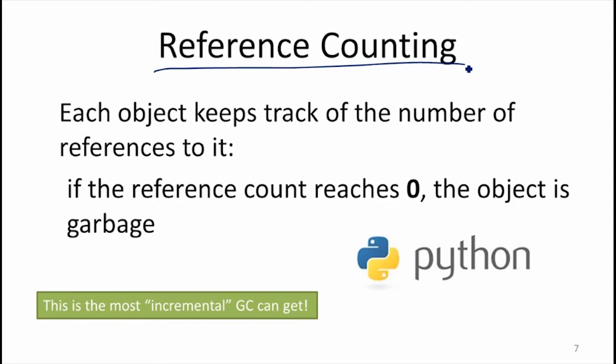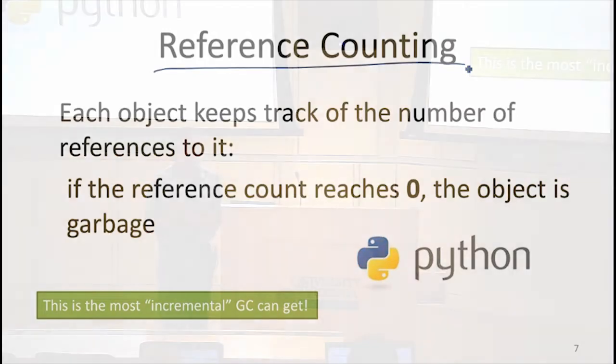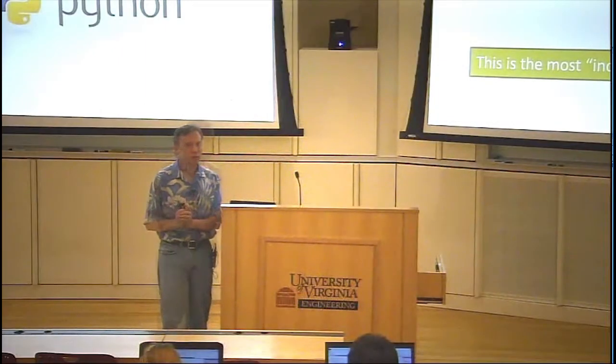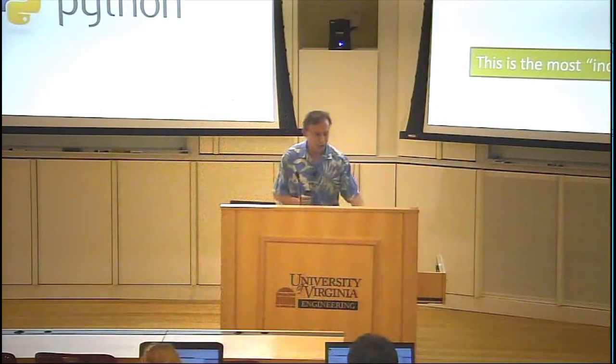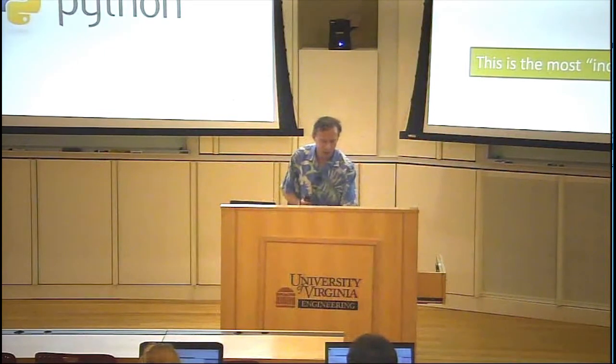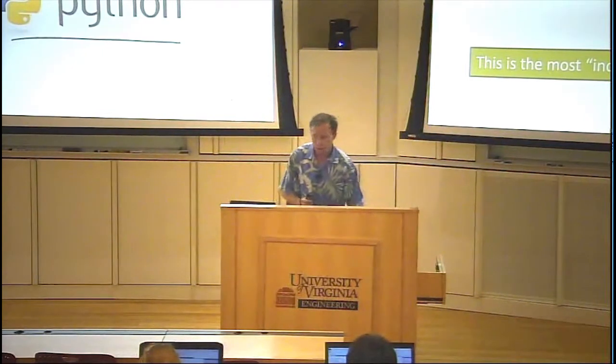Reference counting is basically making garbage collection totally incremental. For each object, you keep track of the number of references to it, and every time you do something that changes that, you update the count. This is what Python does — there are other languages that use reference counting as their main automatic memory management. It's not the only thing Python does, and we'll see why later, but it's the main mechanism Python uses for memory management.